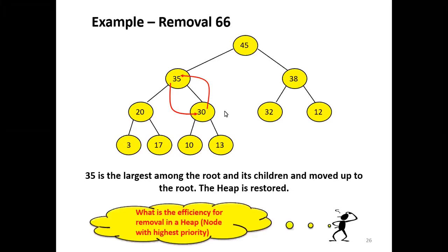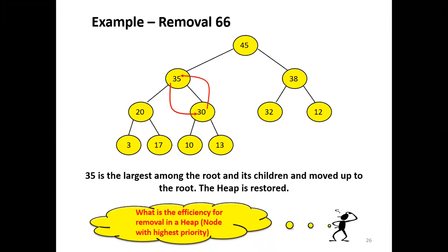The efficiency for removing an element from a heap is O(log n). Comparing with the priority queue using an array — where the efficiency for removing was O(n) — the heap reduces the removal complexity to O(log n).